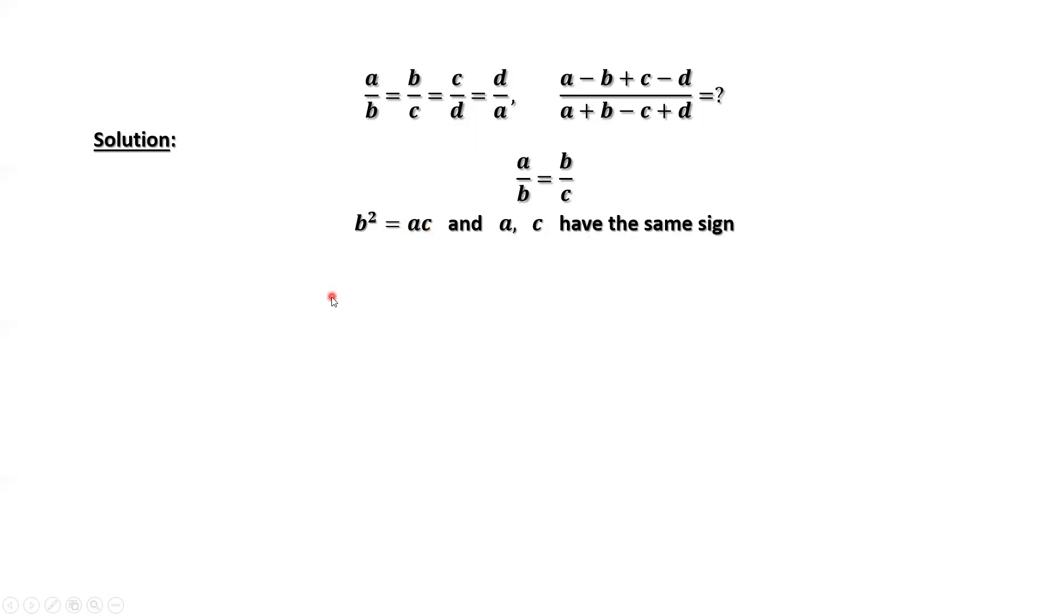Similarly, we have C squared equals BD, D squared equals AC, and A squared equals BD. We have the similar result. B and D have the same sign.